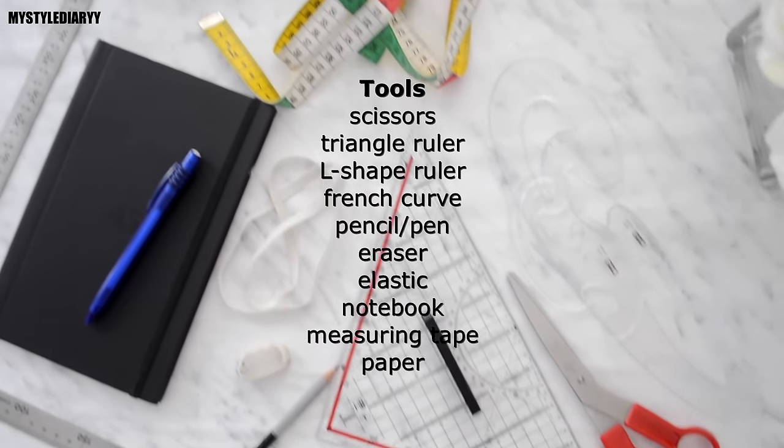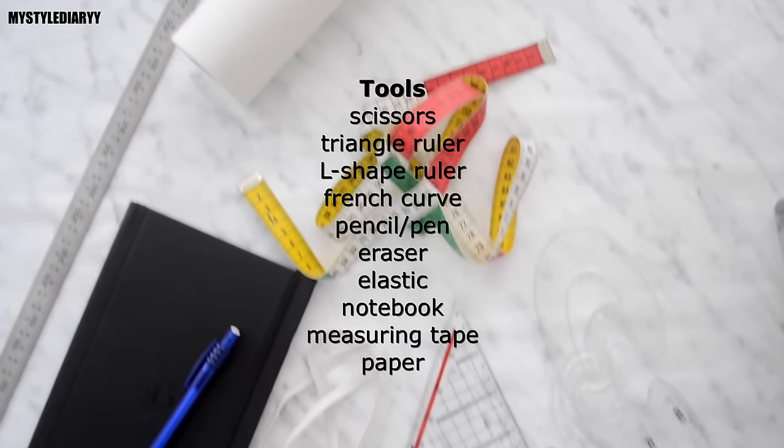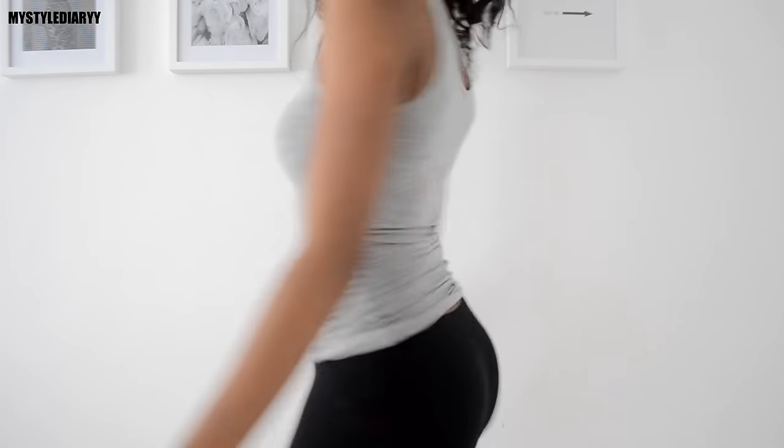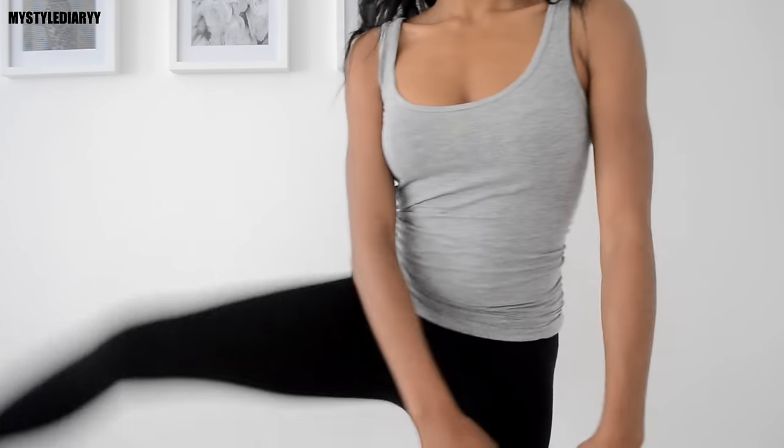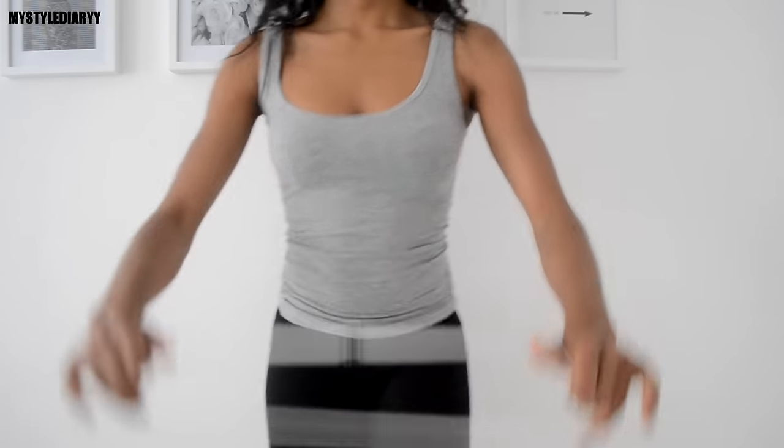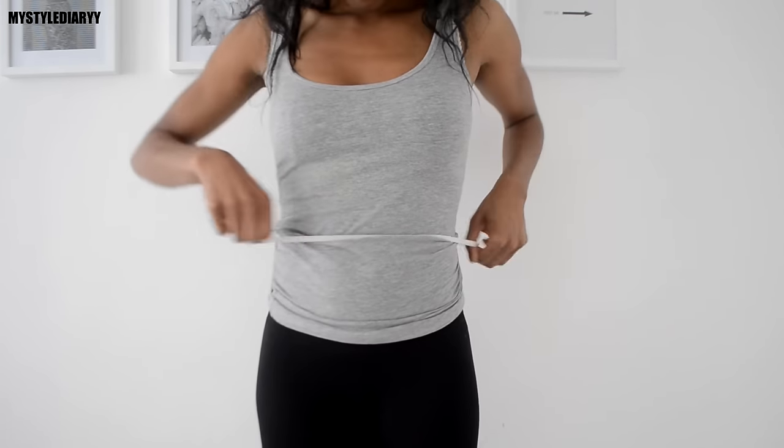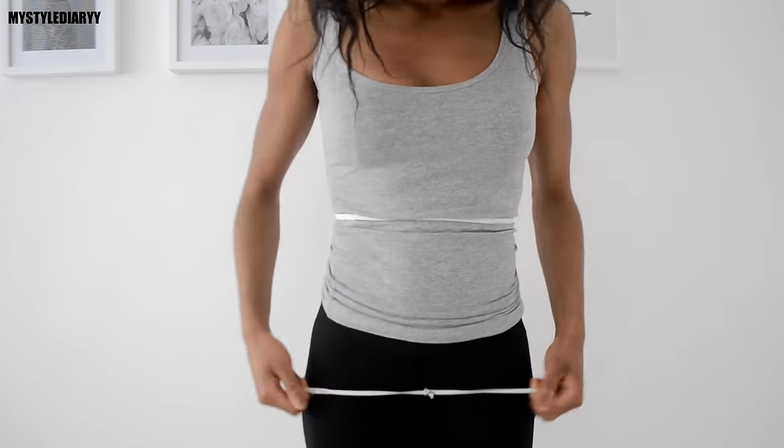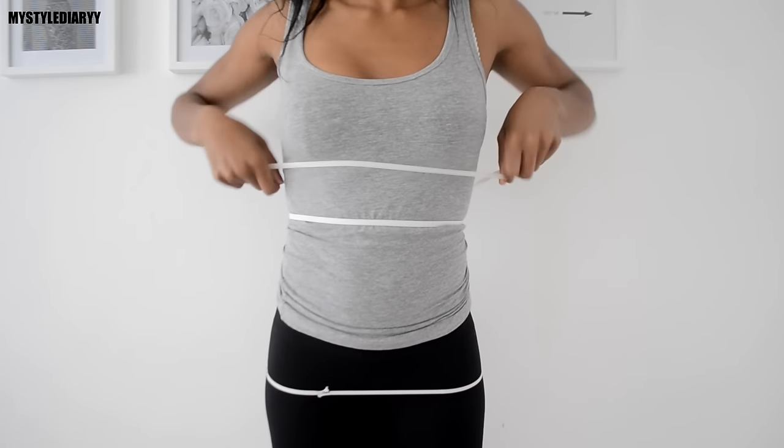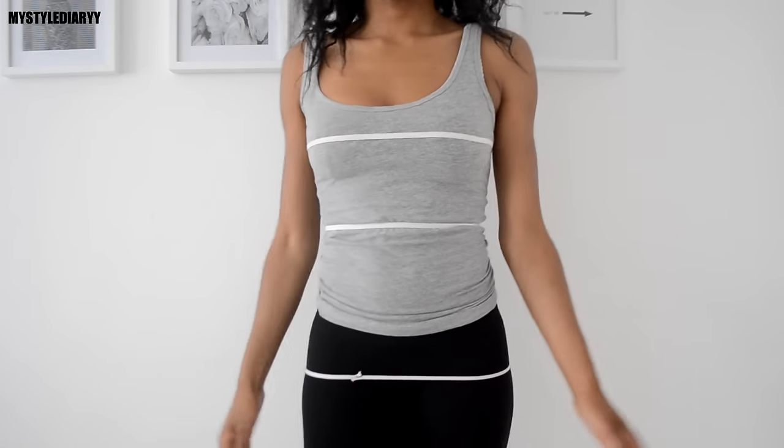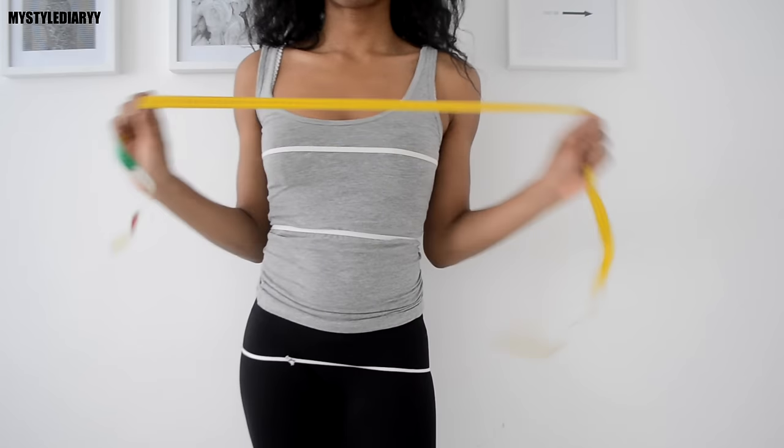When taking your measurements try to wear only your undergarment or otherwise make sure you wear thin clothing. First you will need three narrow elastic bands placed around the fullest part of your bust and hip and on your natural waist. This will not only make your life easier, it also keeps your measurements accurate and consistent.